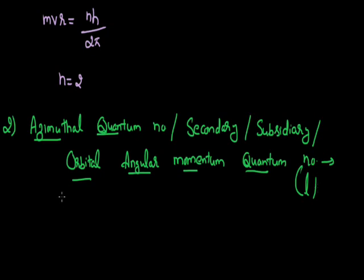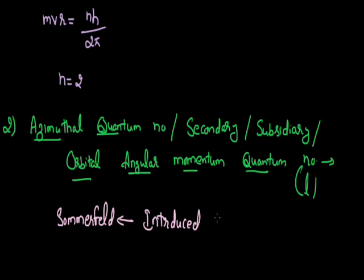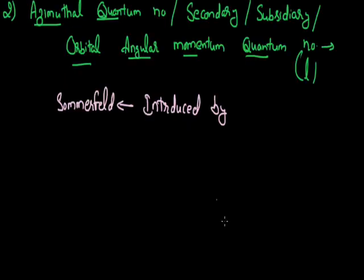This azimuthal quantum number was introduced by Sommerfield in his atomic model, known as Sommerfield's atomic model. The range of this azimuthal quantum number depends on the principal quantum number. As it is the secondary quantum number, its value is decided by the principal quantum number. For a given value of principal quantum number n, the value of l ranges from 0 to n−1.